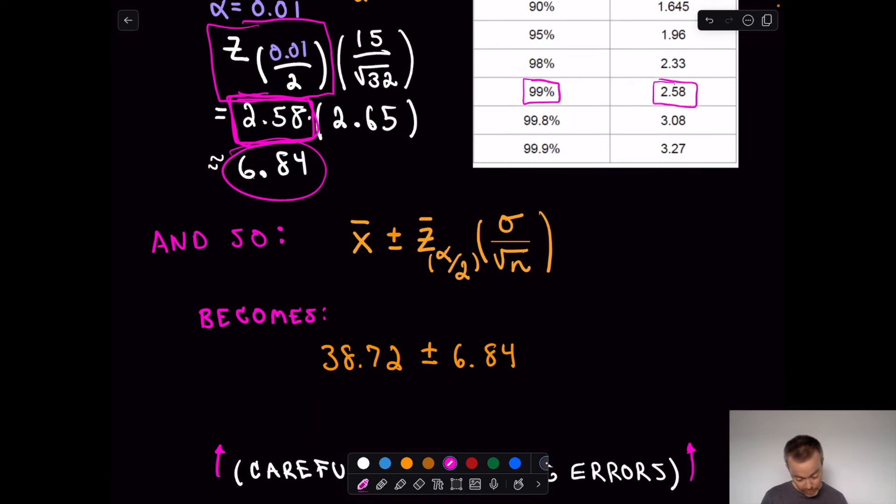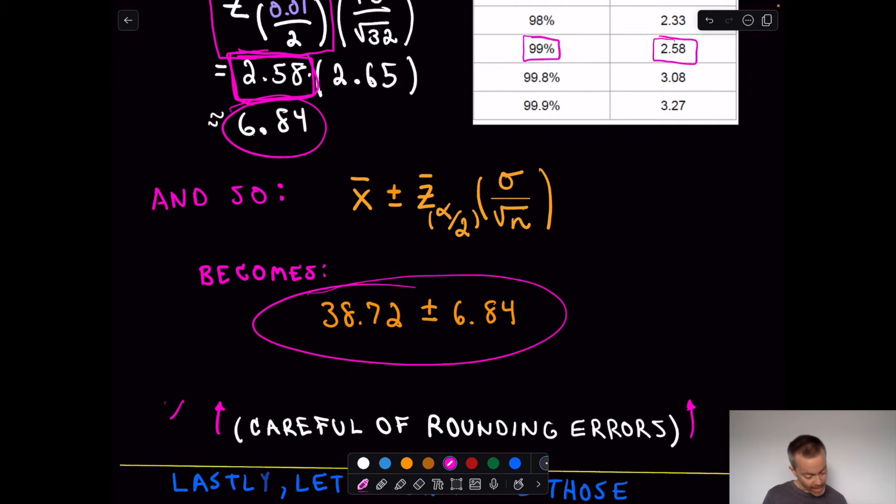So I got this to be roughly equal to 6.84. Same thing. I now just drop it into my formula. And again, you could write that as an interval. Great. So now I've got my two confidence intervals. One little thing I want to point out, I did use some rounding. There may be rounding errors if you use a calculator or a program, but my answers and your answers should be very, very close.